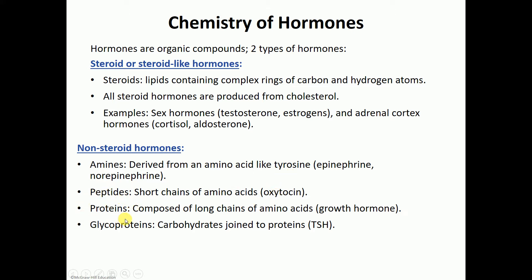A protein hormone is made out of a longer chain of amino acids — for instance, growth hormone. A glycoprotein is a protein where you add a carbohydrate to it, so you have a carbohydrate joined to a protein. For example, TSH, which stands for thyroid-stimulating hormone.